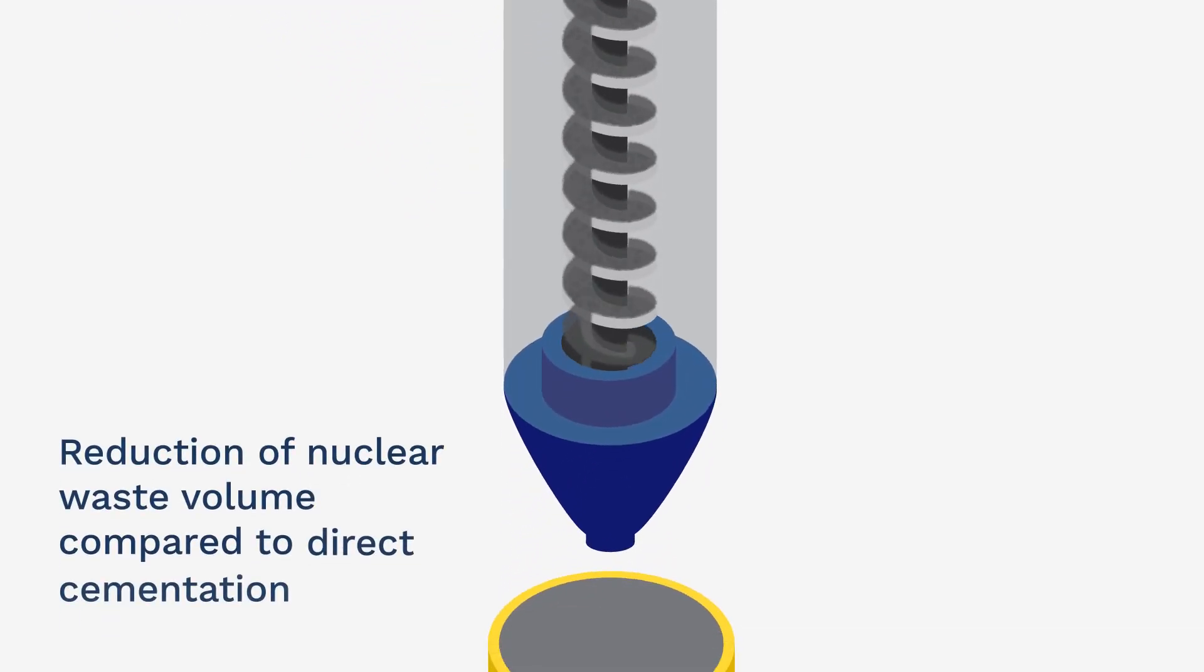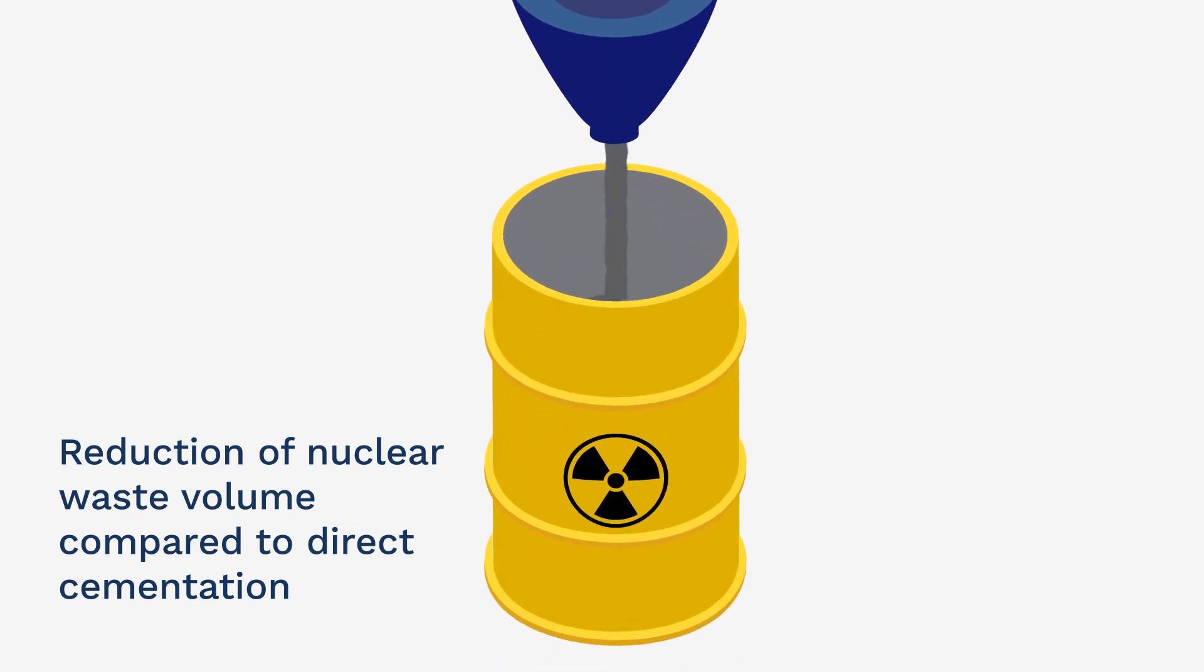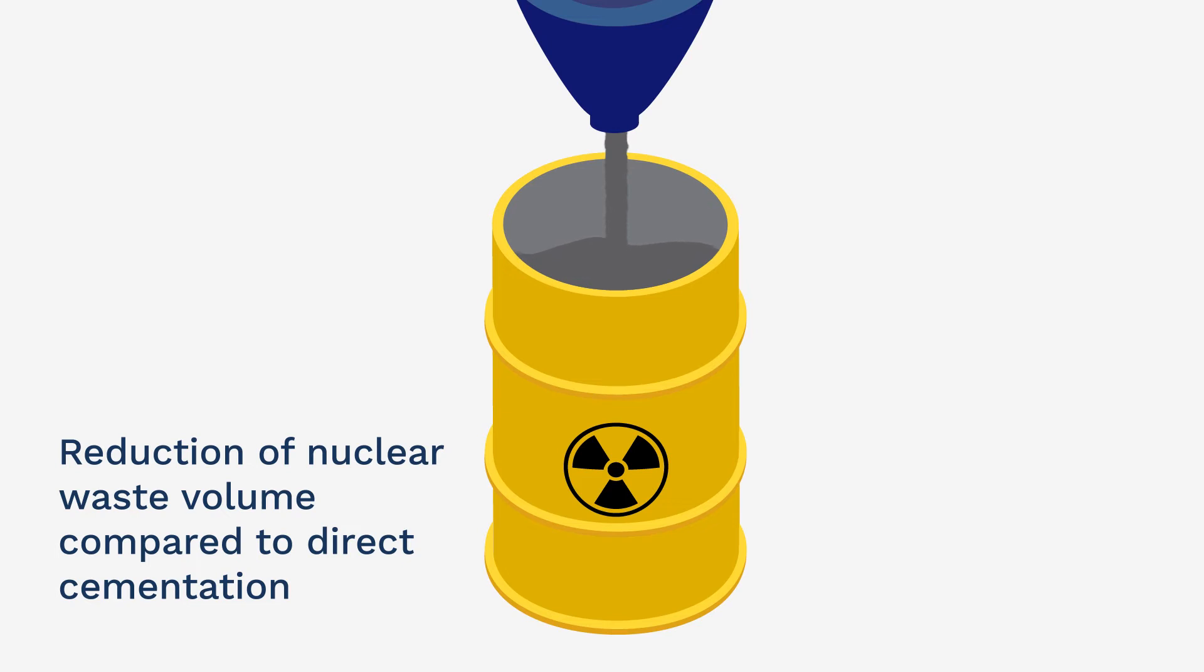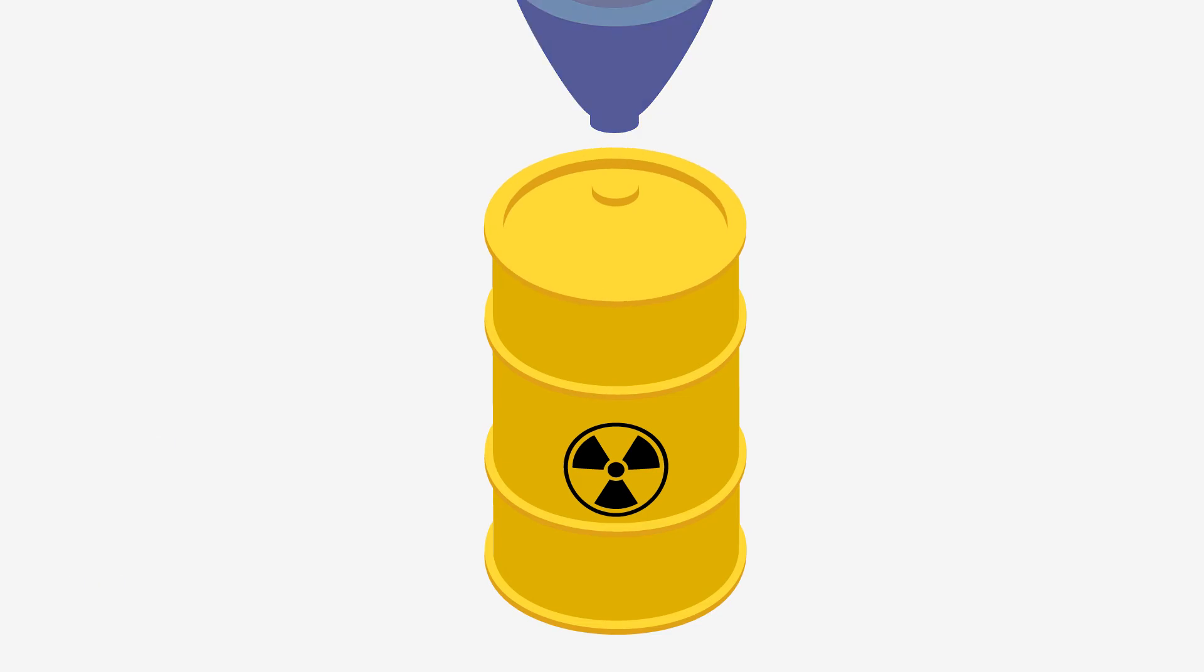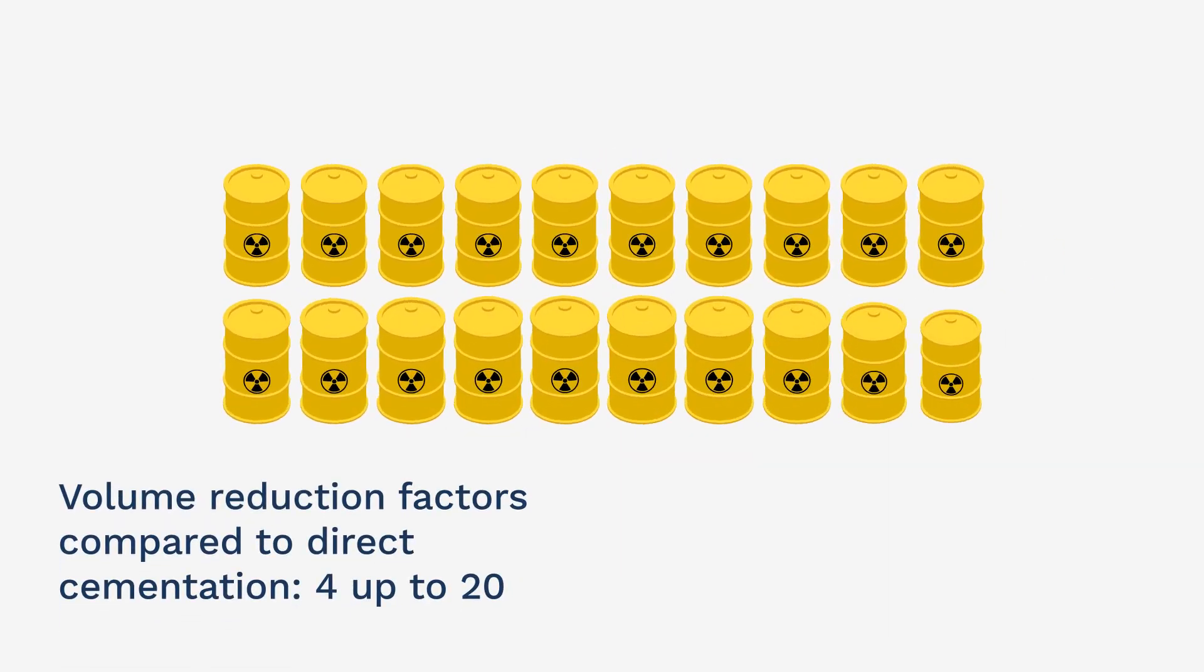With the use of chemical treatment and evaporation as prior process steps, a volume reduction of the nuclear waste compared to direct cementation is possible. Volume reduction factors from 4 up to 20 can be achieved.